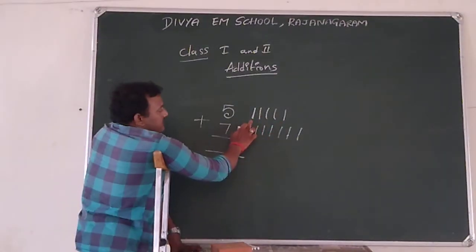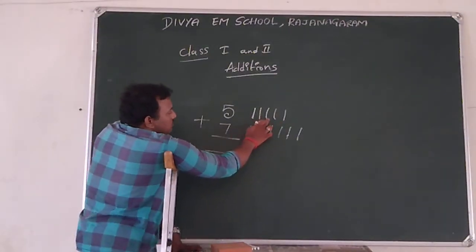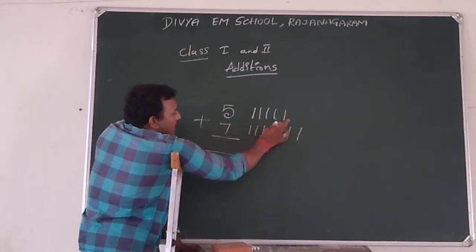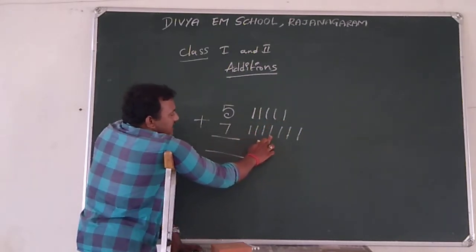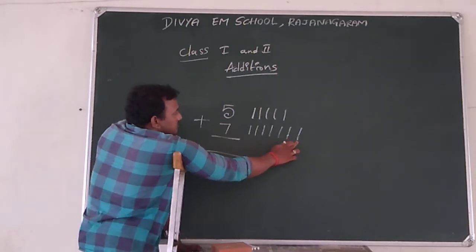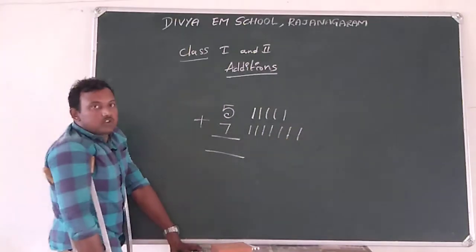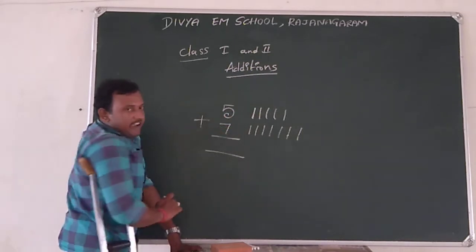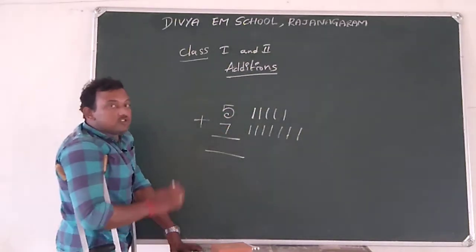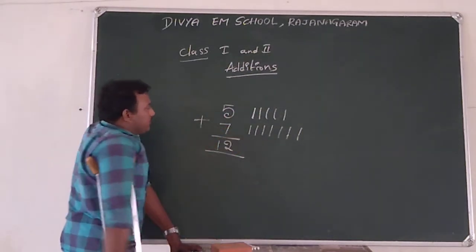So let's count: 1, 2, 3, 4, 5, 6, 7, 8, 9, 10, 11, 12. So when we add 5 and 7, the result is 12.